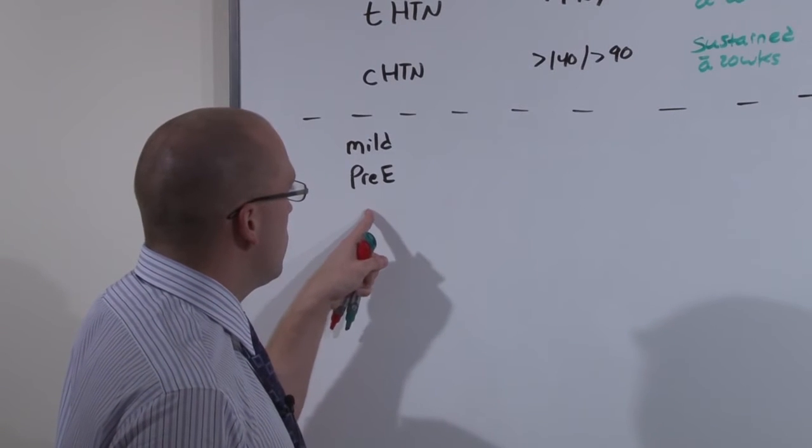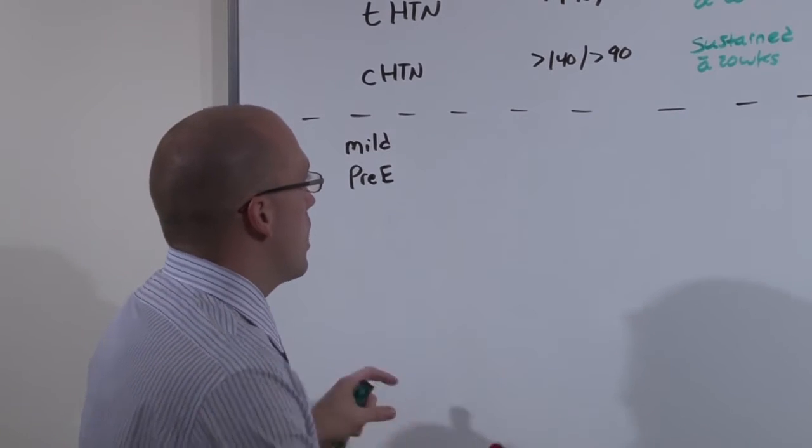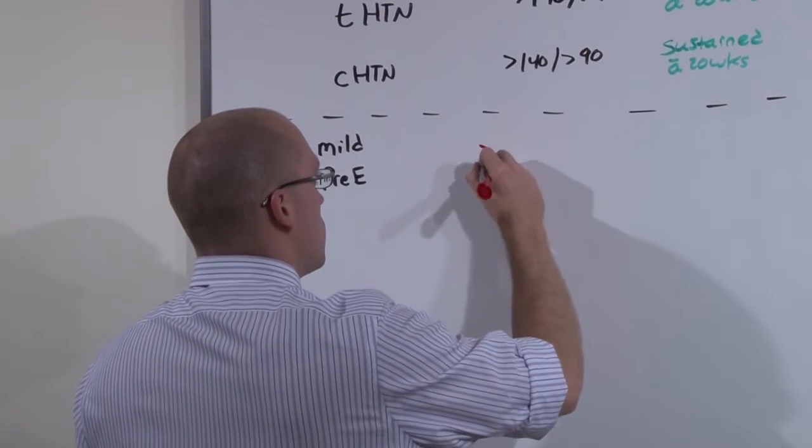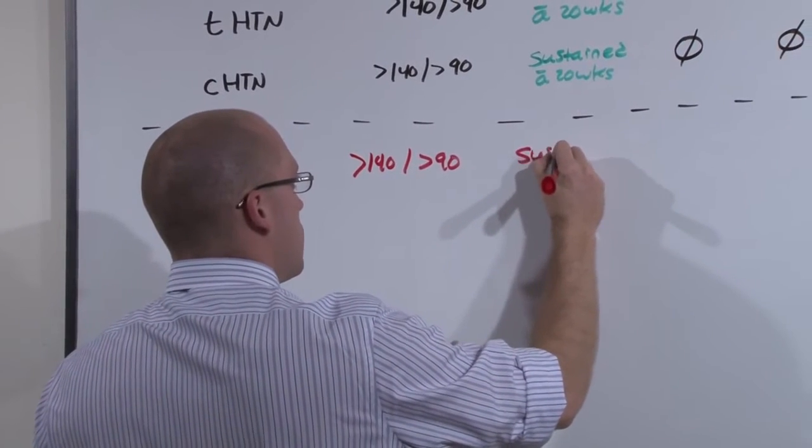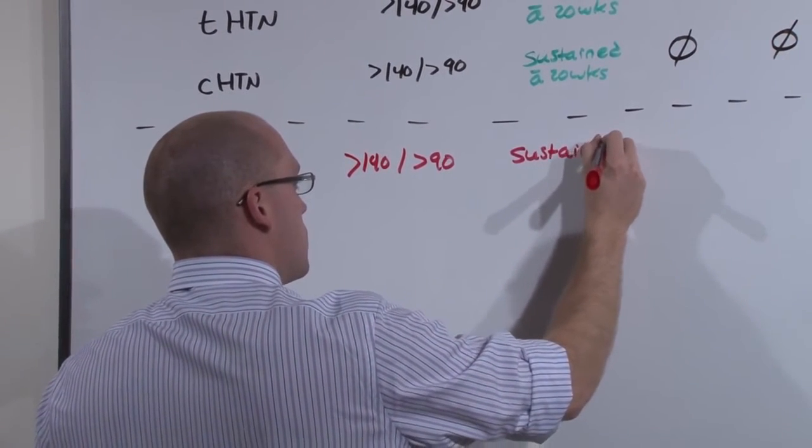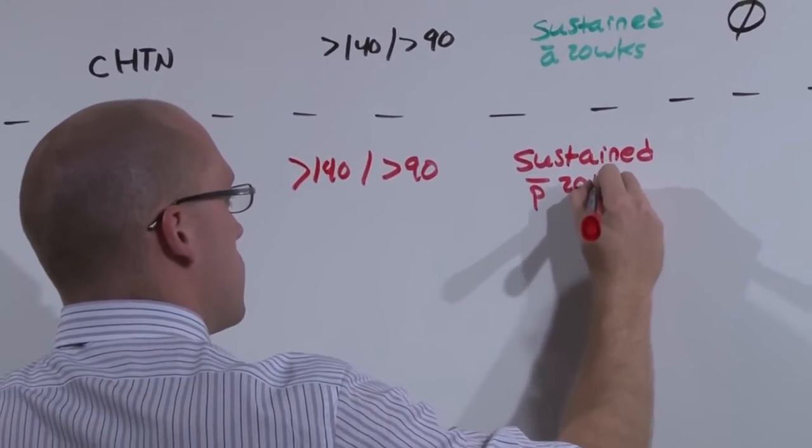Mild pree, that is mild preeclampsia, is going to be defined by an elevation in the blood pressure, greater than 140 or greater than 90, that is sustained. But because it is the obstetric disease, it will occur after 20 weeks of gestation.